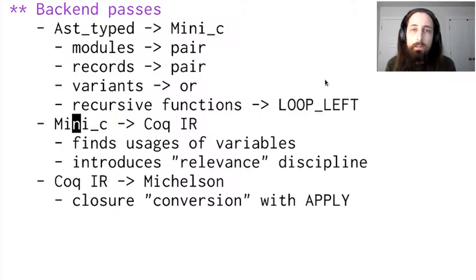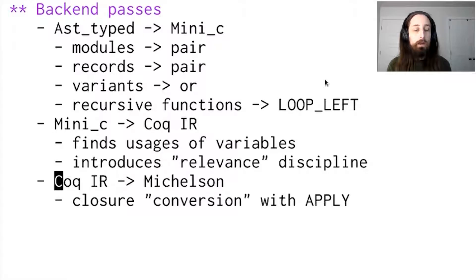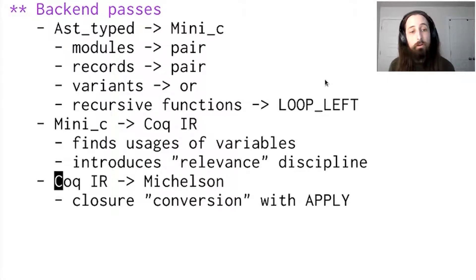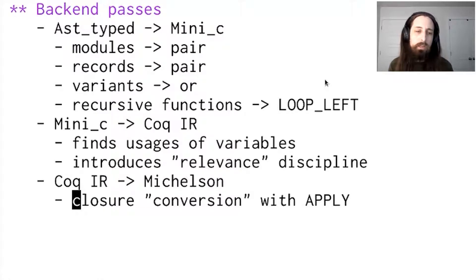Once we do that, we have a translation into a Coq intermediate representation. This stage is defined in Coq and extracted to OCaml. It's about finding where variables are used and introduces a kind of relevance discipline — I'll talk more about that later. Then finally there's a pass which takes this Coq intermediate representation and emits Michelson. The most interesting thing it does is closure conversion — in some sense, closure conversion using the apply instruction — and besides that it's mostly about dealing with this relevance discipline.